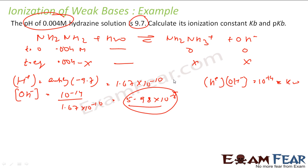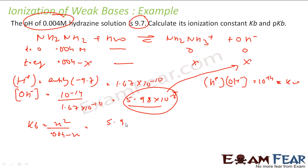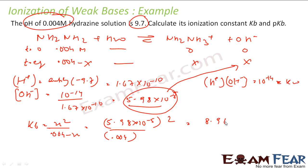This 5.98 × 10⁻⁵ is my x. I can now easily find KB: KB = x² / (0.004 − x). Putting in the values: (5.98 × 10⁻⁵)² / (0.004 − x). Since x is very small, 0.004 − x ≈ 0.004, and solving gives KB = 8.96 × 10⁻⁷.